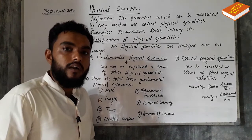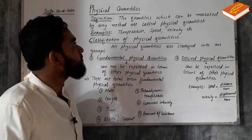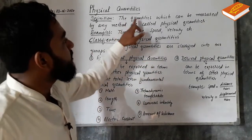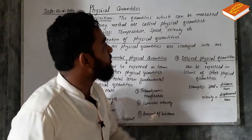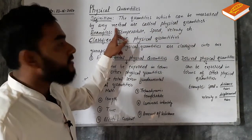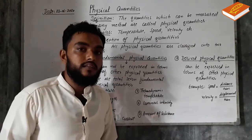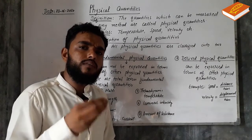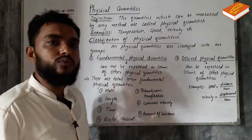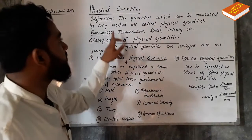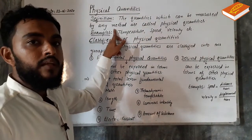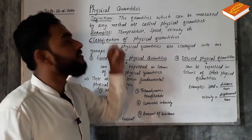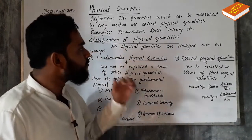Physical quantities are not the total amount. The definition is: the quantities which can be measured by any method are called physical quantities. A quantity which can be measured by any method — if you have measured that amount, those are physical quantities.